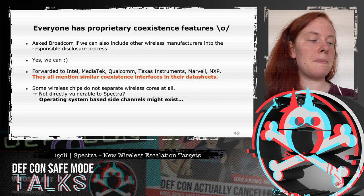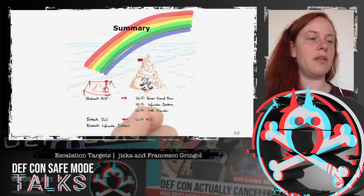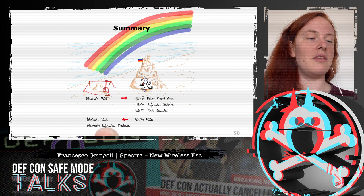In summary: with a Bluetooth RCE on a Broadcom chip, you can cause driver kernel panics, get information disclosure about Wi-Fi, and even achieve code execution within Wi-Fi. Conversely, with a Wi-Fi RCE you can perform denial of service against Bluetooth and get information disclosure within Bluetooth. Questions can be addressed in the Q&A, via Twitter, or by email to the presenters.